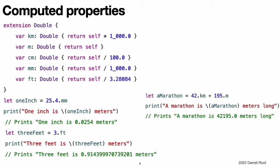These computed properties express that a double value should be considered as a certain unit of length. Although they are implemented as computed properties, the names of these properties can be appended to a floating-point literal value with dot syntax as a way to use that literal value to perform distance conversions. In this example, a double value of 1 is considered to represent 1 meter. This is why the m computed property returns self.